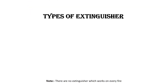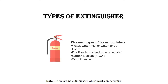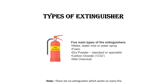Types of Extinguishers. There are five main types of fire extinguishers: water type fire extinguisher, which comes in two different versions — water mist and water spray; foam type fire extinguisher; dry powder fire extinguisher, which also comes in two versions — standard dry powder and specialist dry powder fire extinguisher; then carbon dioxide fire extinguisher; and wet chemical fire extinguisher.